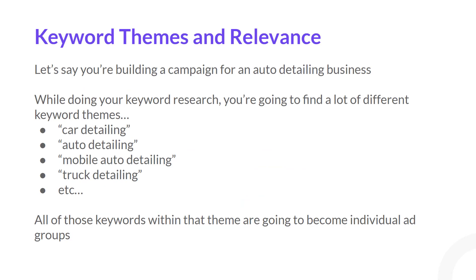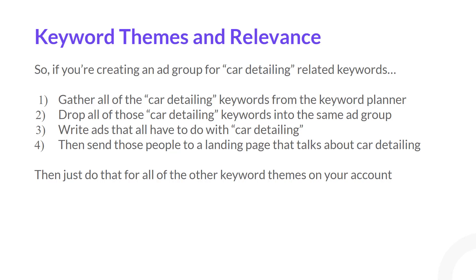One of the examples I have is actually a detailing campaign, and I also have junk removal. Just for the sake of example, let's say you're building a campaign for an auto detailing business. When you're doing your keyword research in your keyword planner and looking through all the different keyword ideas, you're going to find a lot of different themes: there's going to be car detailing, auto detailing, mobile auto detailing, truck detailing, etc. All of these different keyword themes are going to become individual ad groups when you're building out your account.